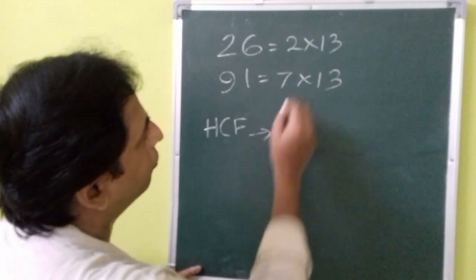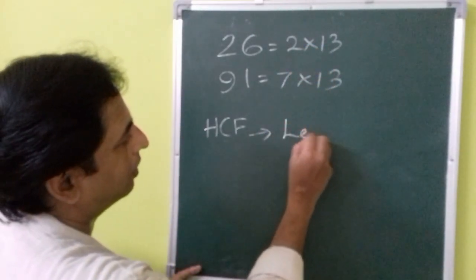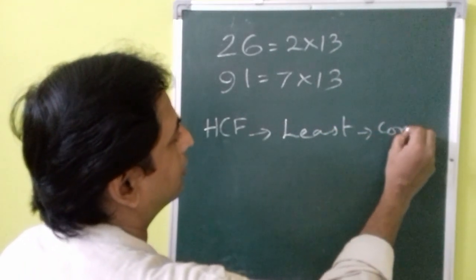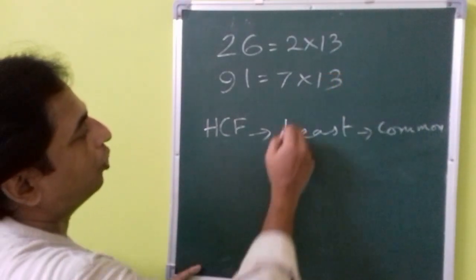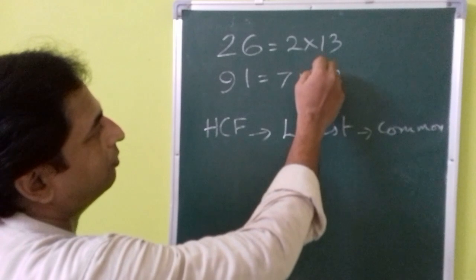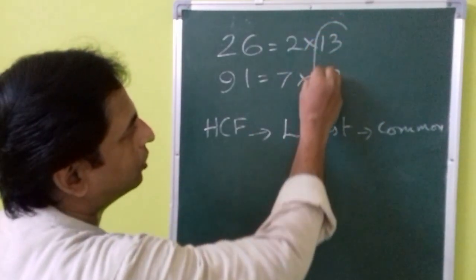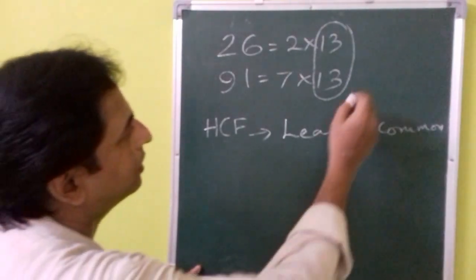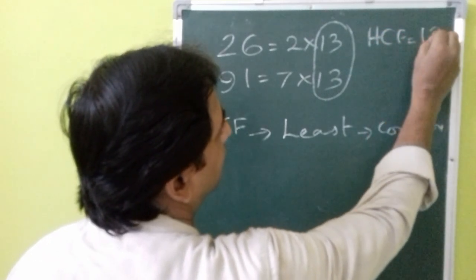You can take the product of the smallest power or the least power of common factors. First of all, you need to see which are the common factors. Here only 13 is common, and the least power is itself. So that means the HCF of this number is 13.